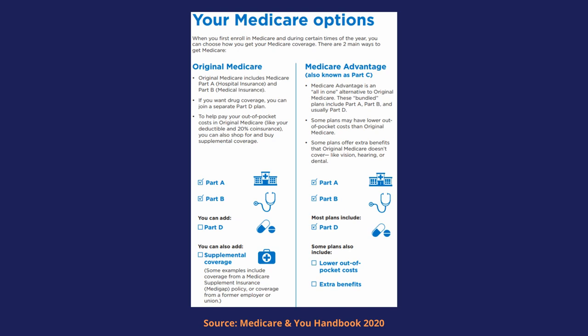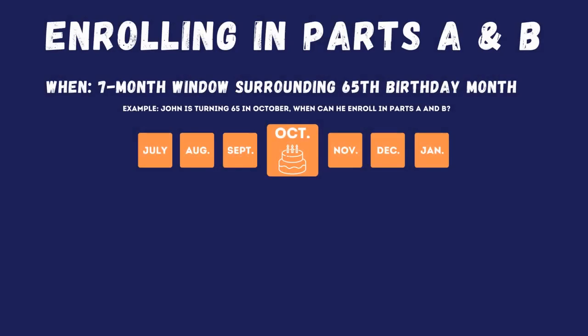Whichever option you choose, the first step is enrolling in Part A and B of Medicare. So let's assume you're approaching 65, you don't have any employer insurance, and you're ready to enroll. The best time to do that is called your initial enrollment period — a seven-month window surrounding your 65th birthday month.